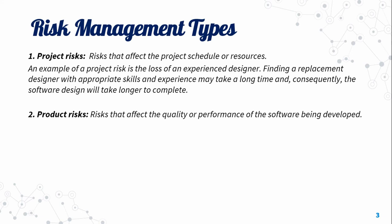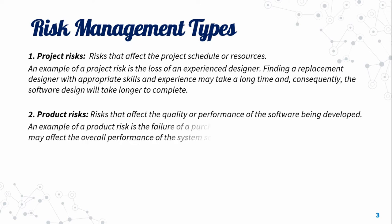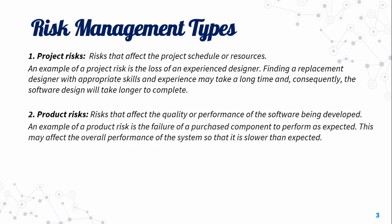Product risk refers to risks that affect the quality or performance of the software being developed. An example of a product risk is the failure of a purchased component to perform as expected. This may affect the overall performance of the system so that it is slower than expected. That means the process is slower, so we have product risk.